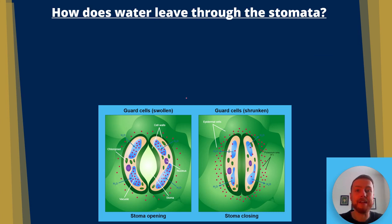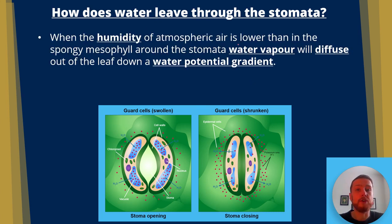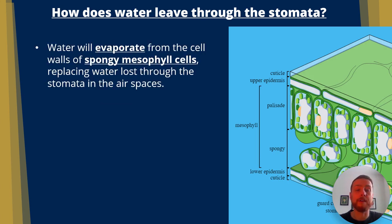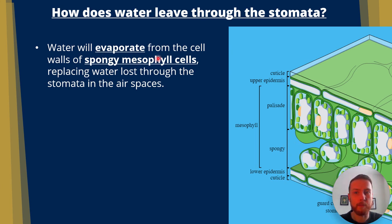How does water actually leave through the stomata? When the humidity of atmospheric air is lower than in the spongy mesophyll around the stomata, water vapor will diffuse out of the leaf down a water potential gradient. Water evaporates from the cell walls of spongy mesophyll cells — you can see these cells with air spaces around them — and that replaces the water lost through the stomata.